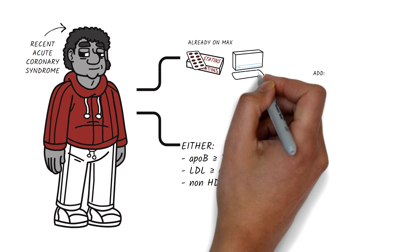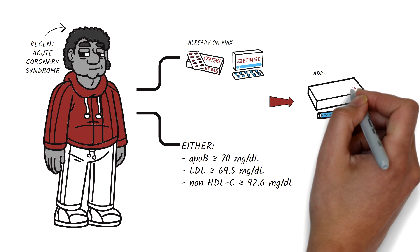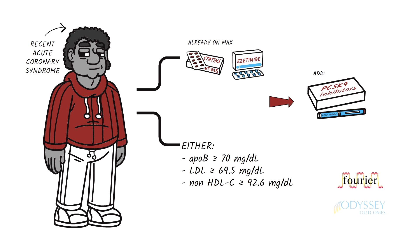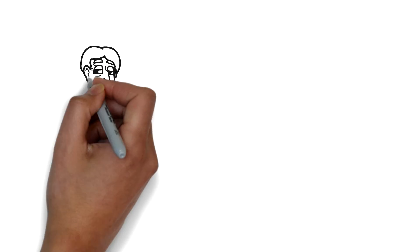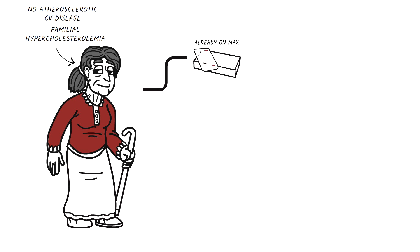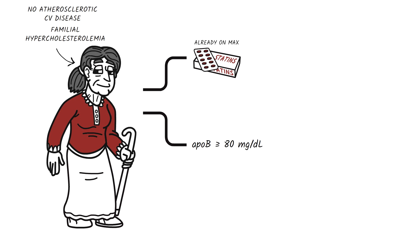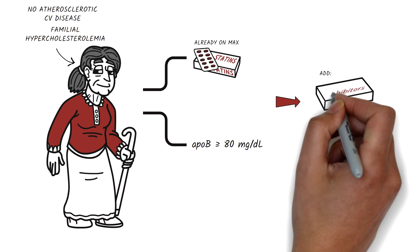Or, if the same patient is already on a statin and ezetimibe, then intensifying therapy with a PCSK9 inhibitor should be considered. The Fourier and Odyssey trials, which demonstrated increased benefit with statin plus PCSK9 therapy, have added powerfully to this recommendation. If your patient has no atherosclerotic cardiovascular disease but does have familial hypercholesterolemia, is already on a maximally tolerated dose of statins with or without ezetimibe, and their ApoB is ≥80 mg/dL, then PCSK9 inhibitors should be used.